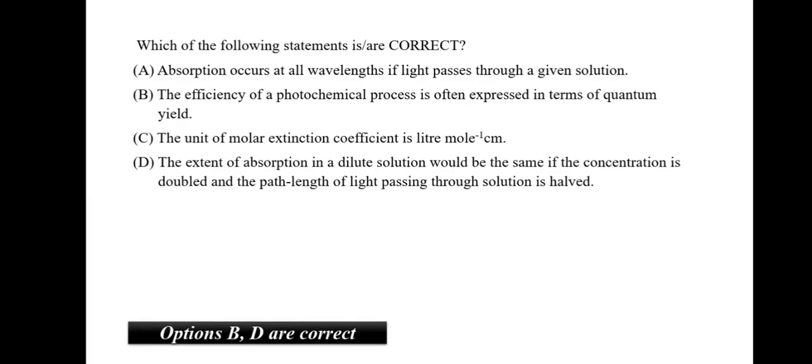Which of the following statements is correct. Absorption occurs at all wavelengths if light passes through a given solution. The efficiency of photochemical process is often expressed in terms of quantum yield. The unit of molar extinction coefficient is liter mole per centimeter. The extent of absorption in a dilute solution would be same if the concentration is doubled and the path length of the light passing through solution is halved. The A option we know is completely wrong as well as C. Whereas B and D, if we look at it, D just states the Beer-Lambert's law. Thus, B and D would be the correct answer.